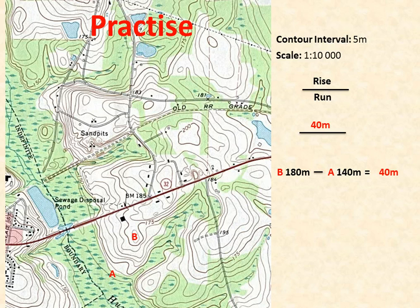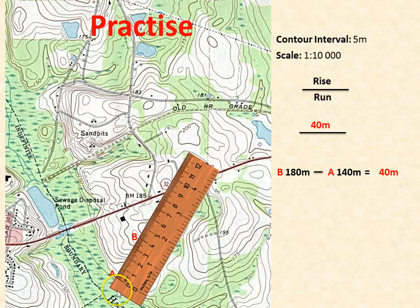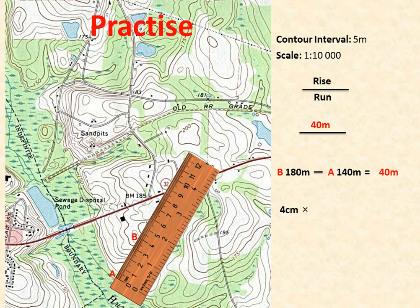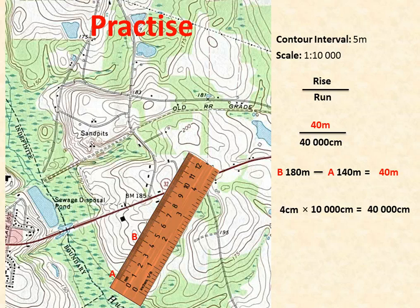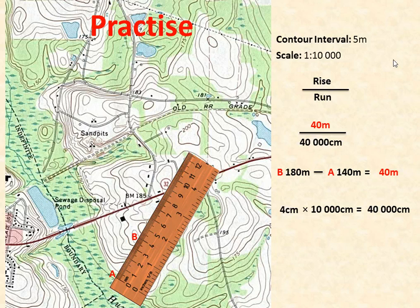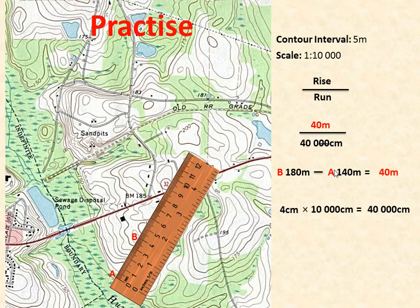Let's determine our run. To do that we need to measure the distance between the two points. Using the ruler, it is clearly 4 centimetres. We take our 4 centimetres and, since every 1 centimetre equals 10,000 centimetres, we multiply 4 by 10,000, giving us 40,000 centimetres. But here's the tricky bit — we're in different units. The rise is in metres and the run is in centimetres. We have to have them in the same units. If we cancel out two zeros from centimetres, it converts to metres, so 40,000 centimetres becomes 400 metres.